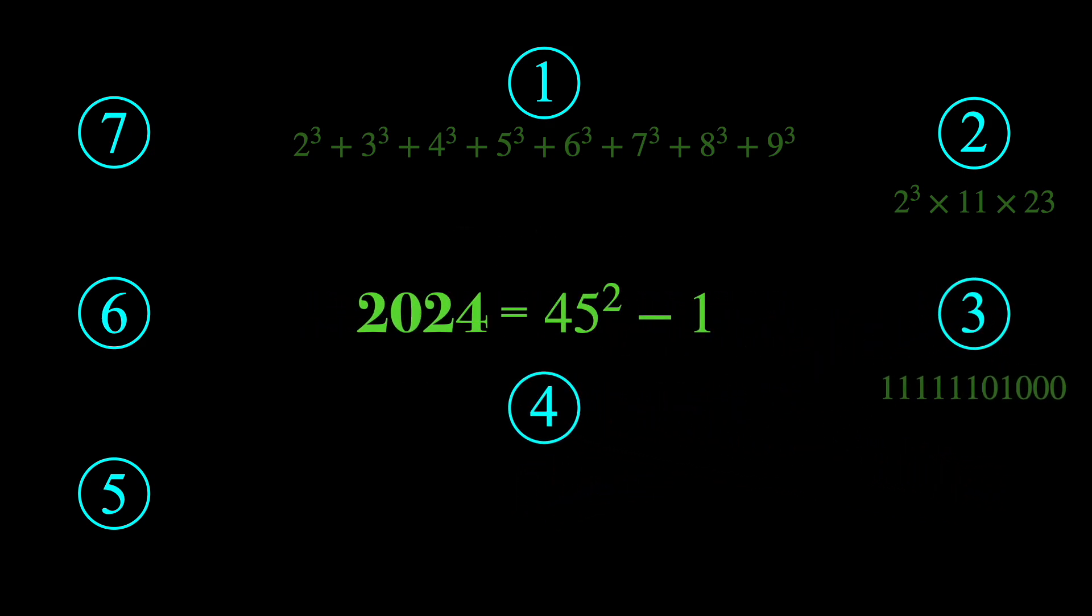Next, it can be written as 45 squared minus 1, which means that it's a Cunningham number. A Cunningham number is a binomial number that can be written as b to the n minus 1, where b is greater than 1, and n is a positive integer.